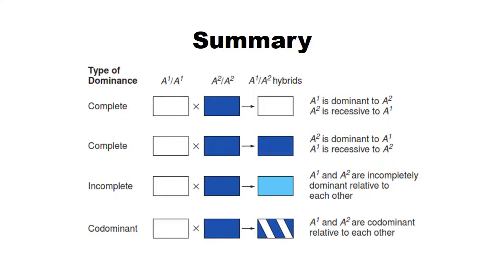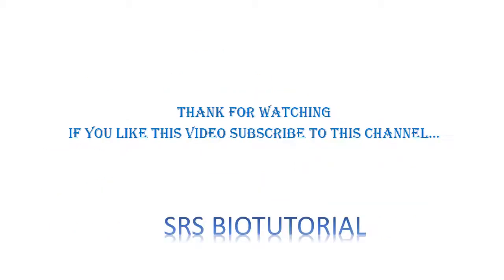In the first possibility, either of the parental phenotypes — white or blue color — is expressed in the F1 hybrid due to complete dominance. In the second possibility, if the trait shows incomplete dominance, then an intermediate color will be developed in the F1 hybrid. If both alleles show co-dominance, then both white and blue colors are expressed simultaneously in the F1 hybrid.